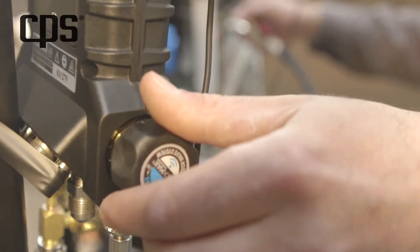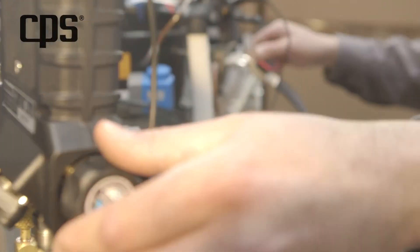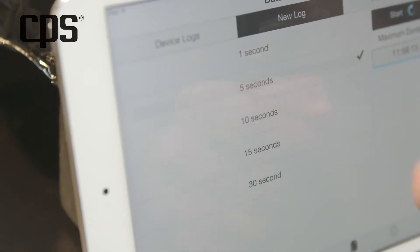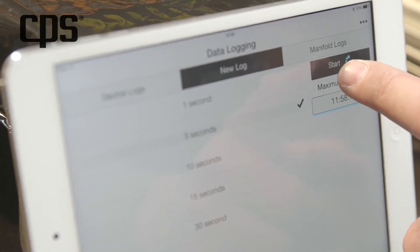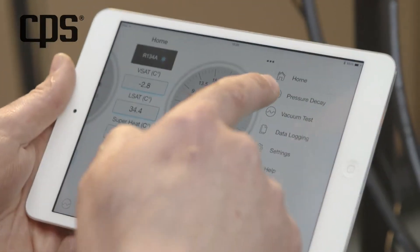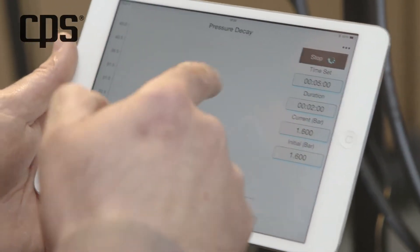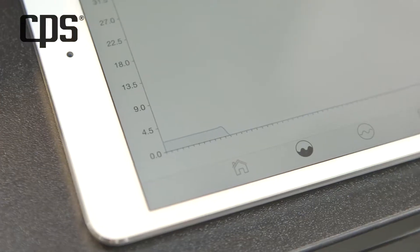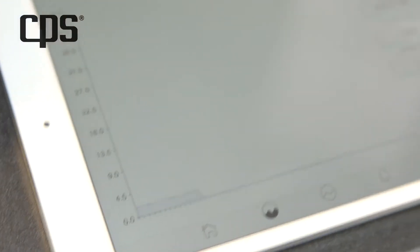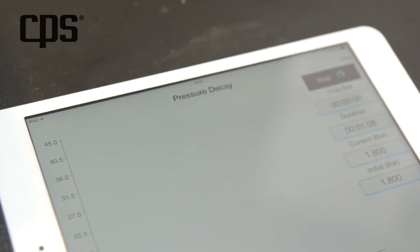After inserting pressure into the system and selecting the duration, the pressure decay test can start. Everything happens in real time. By employing the same functionalities as the pressure decay test, you can execute a vacuum test using vacuum parameters.